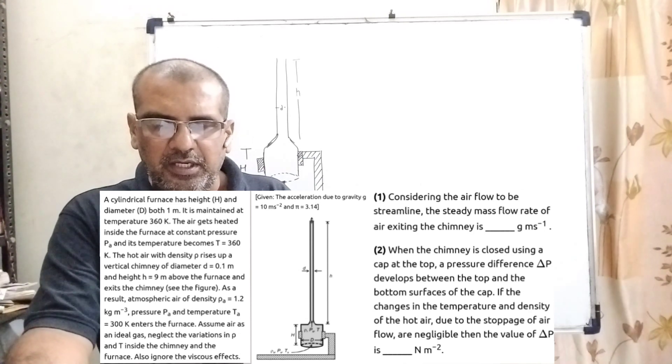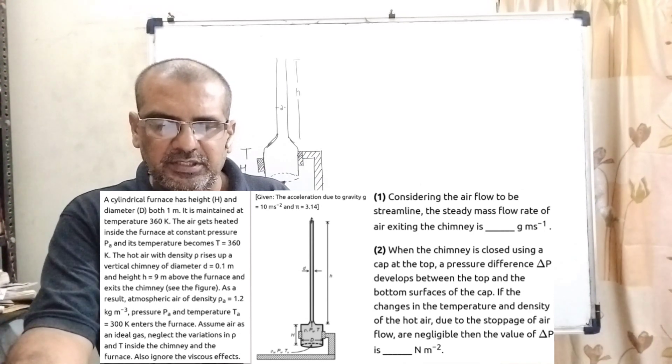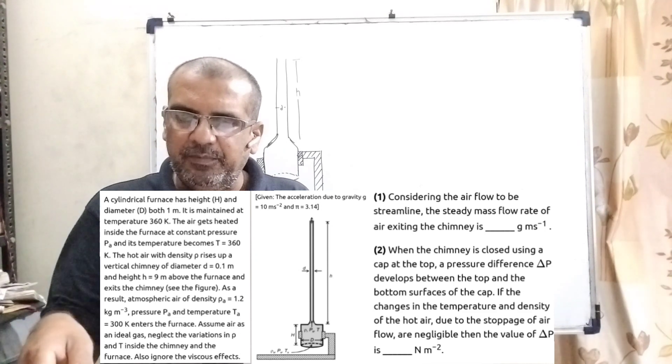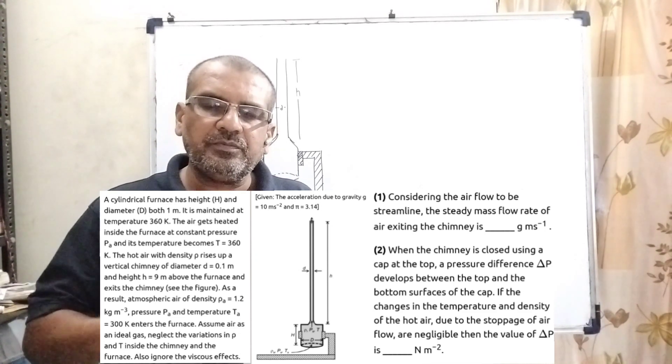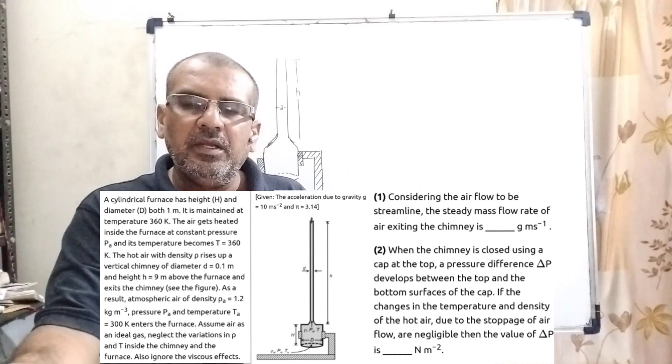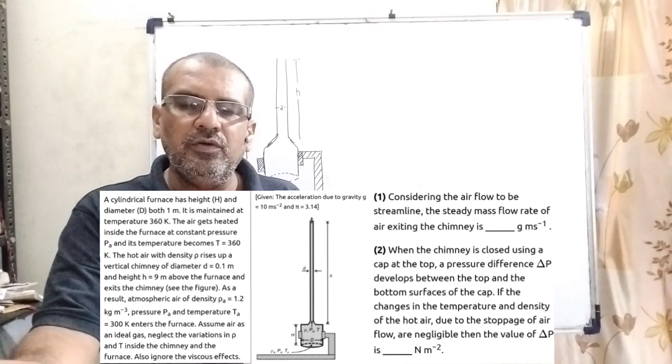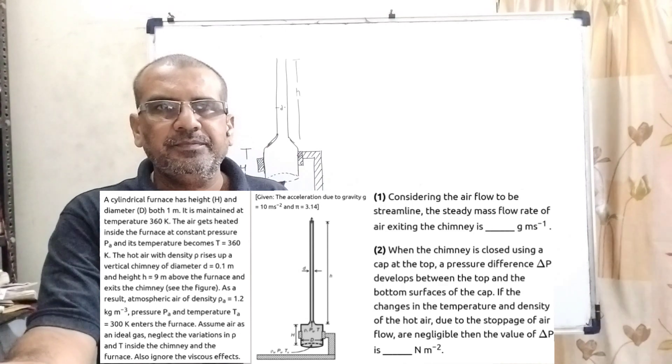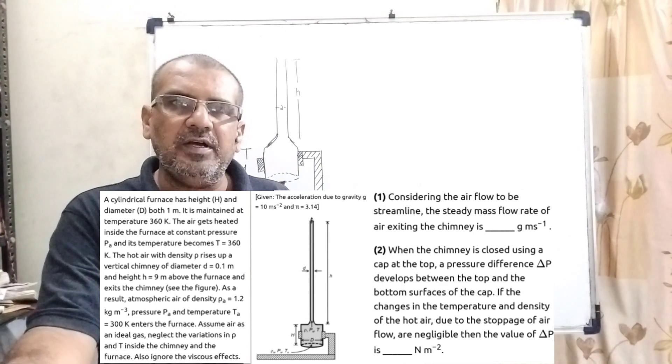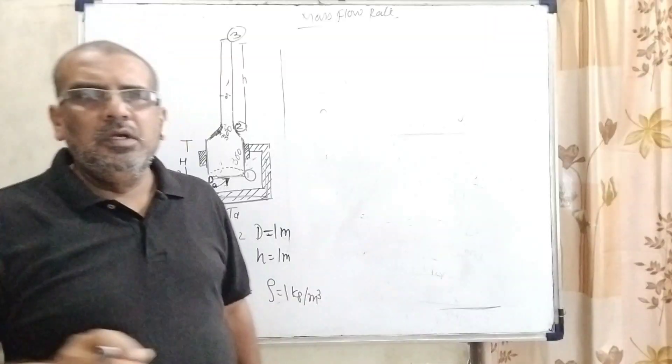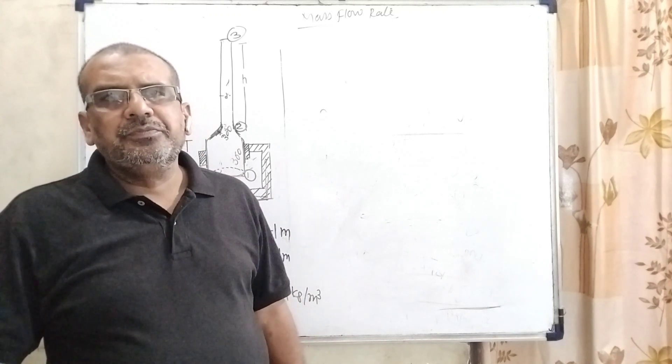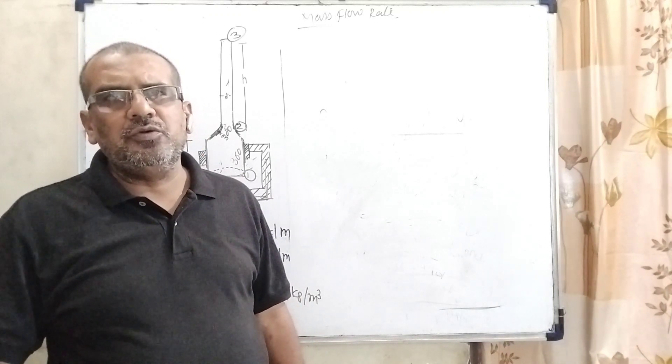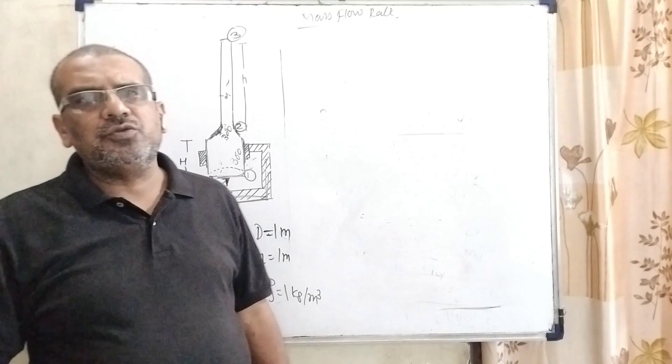Question number two: when the chimney is closed using a cap at the top, a pressure difference delta P develops between the top and bottom surfaces of the cap. If the changes in temperature and density of the hot air due to the stoppage of flow are negligible, then the value of delta P is blank Newton per meter squared. This question is from JEE Advanced 2023. Dear students, this question is the most controversial question of JEE Advanced 2023.